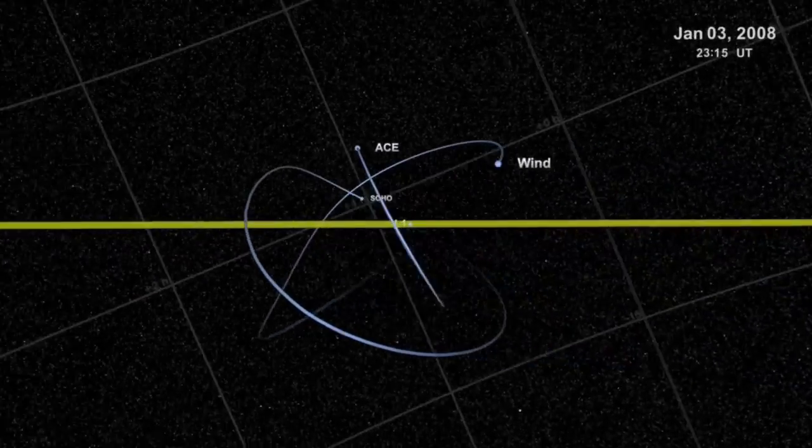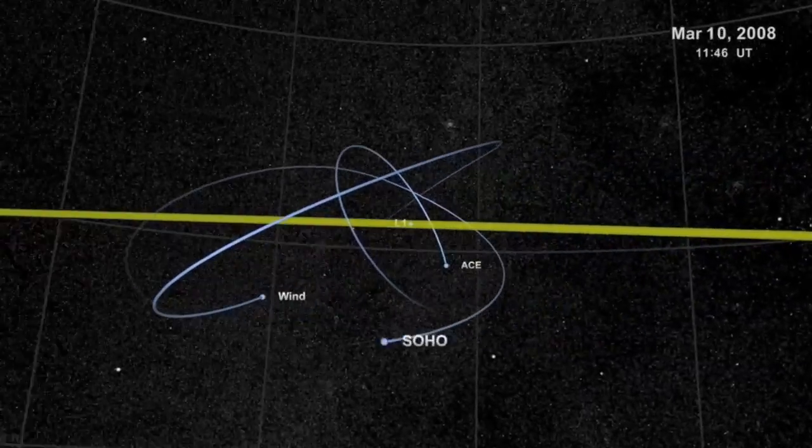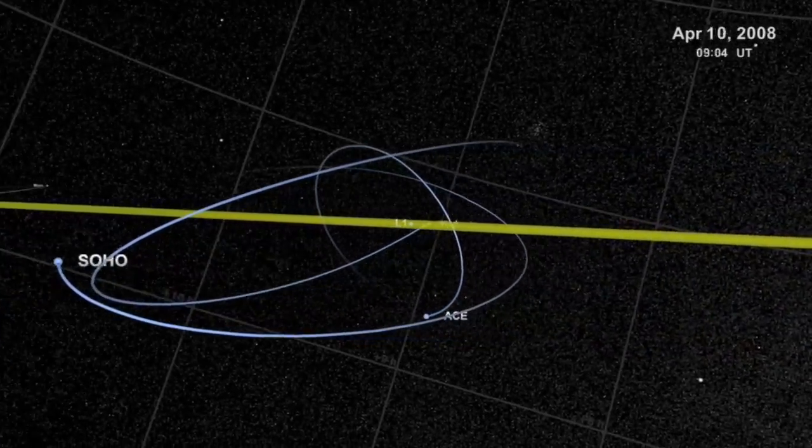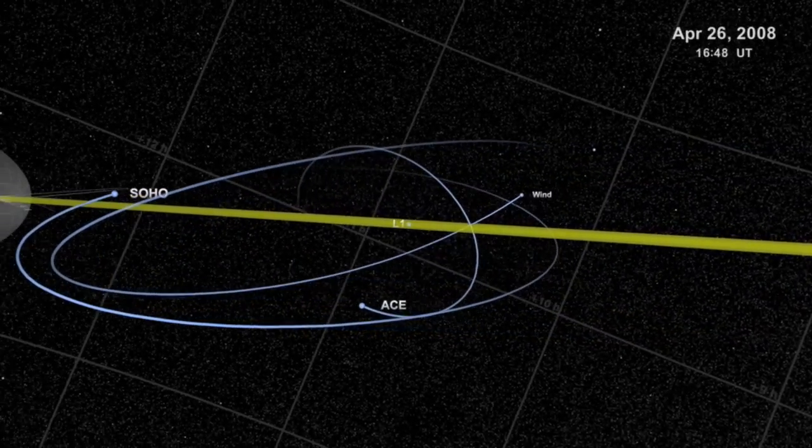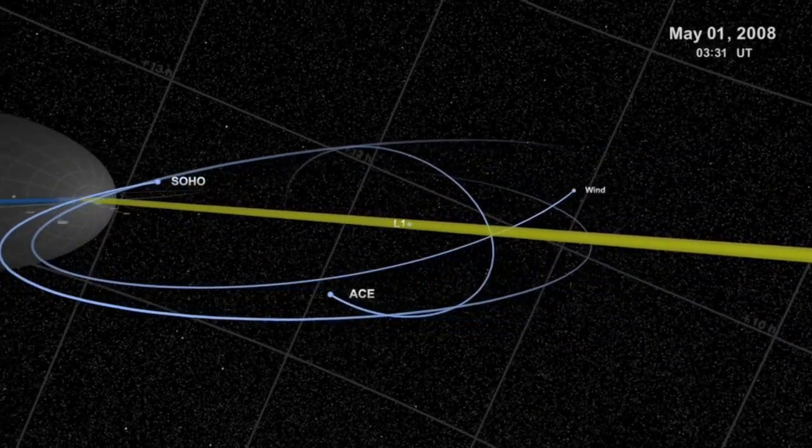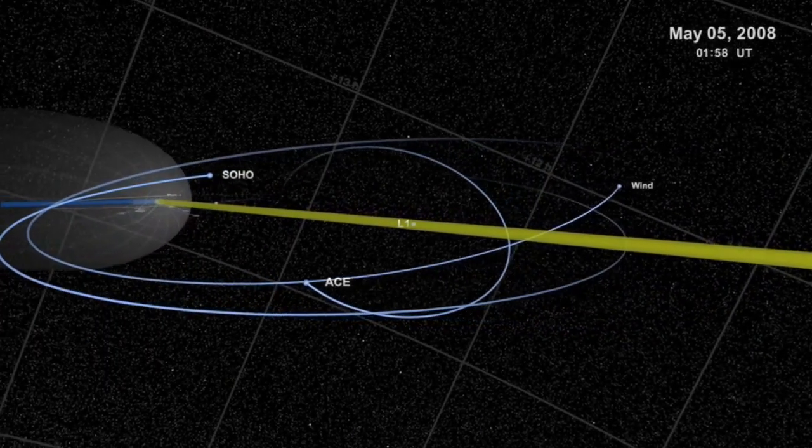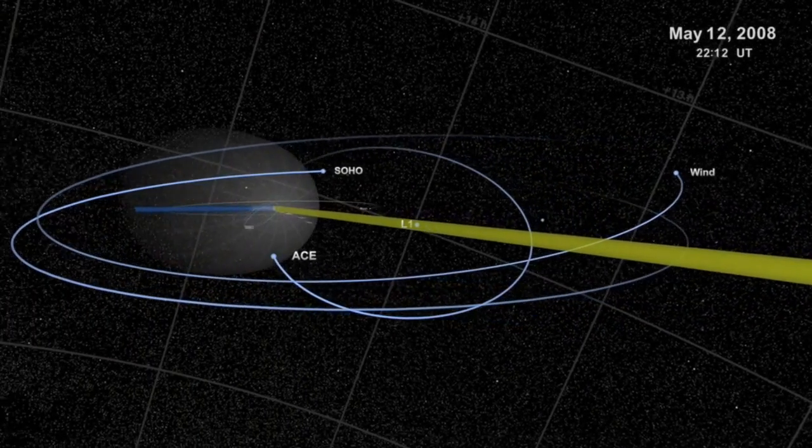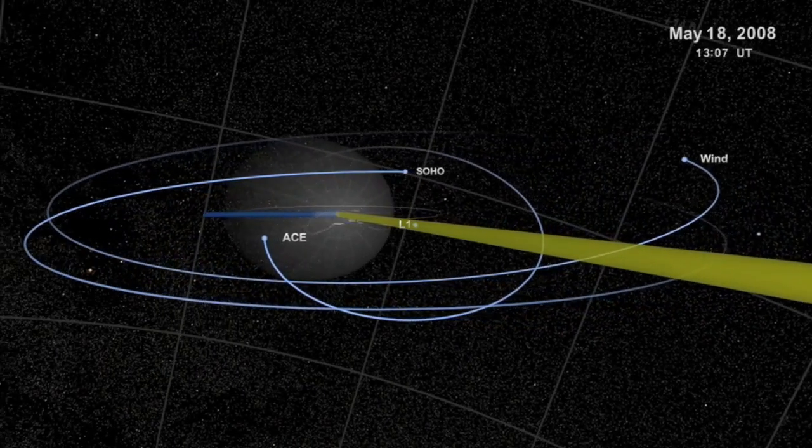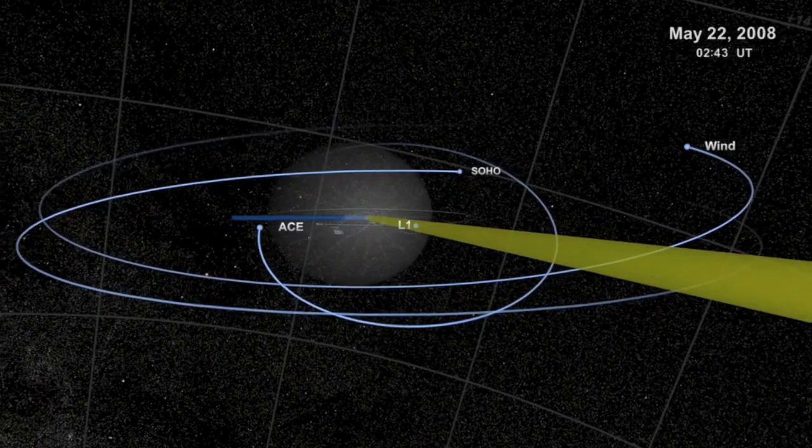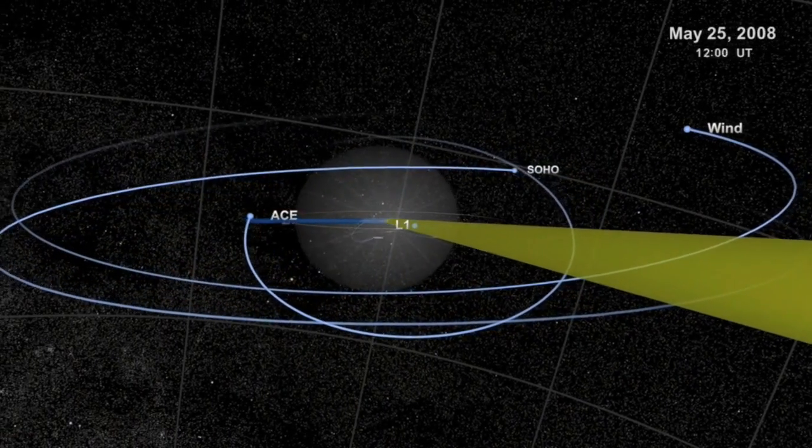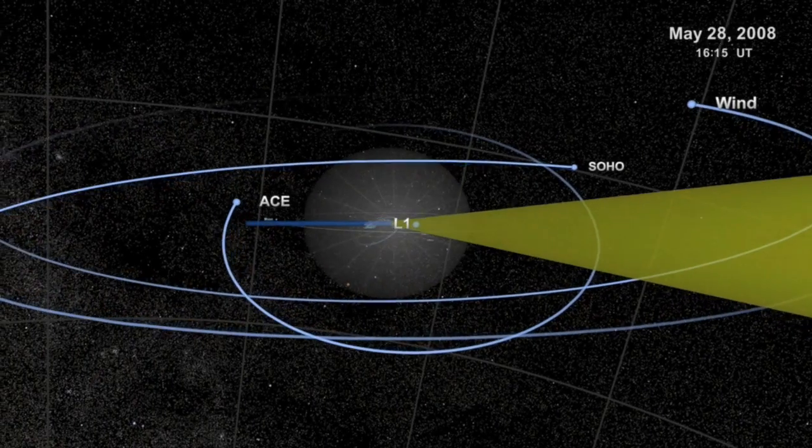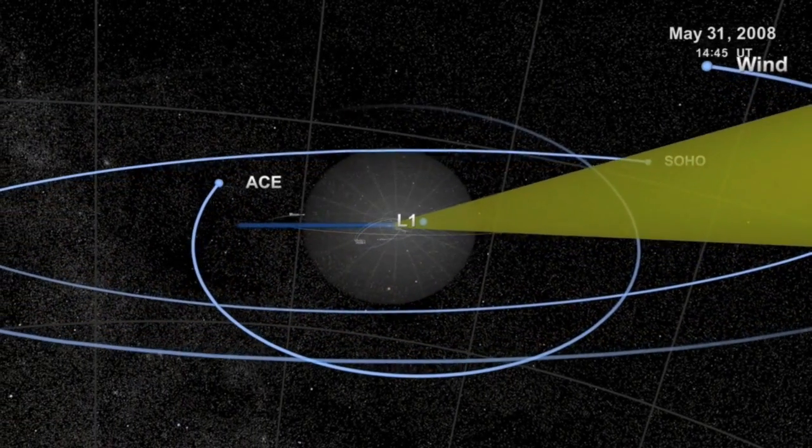Welcome to a Lagrange point. This one, L1 in space speak, denotes a relative position between the Earth and the Sun, where the gravitational pull of each object is in approximate balance. These so-called halo orbits around L1 make good places for hovering spacecraft to take observations of either the Earth or Sun. We find a number of observatories patrolling out here, including an extremely famous and extremely successful solar observatory called SOHO.